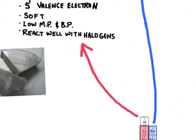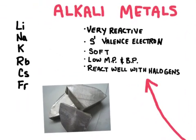Let's start with the alkali metals. The alkali metals are very reactive — they're the most reactive elements. They have one valence electron which makes them react similarly. They're going to be a very soft metal and they have low melting points and boiling points. Usually they're going to be found in compounds reacted with halogens. Here's a picture of sodium, and all of the alkali metals are going to look very similar to this.